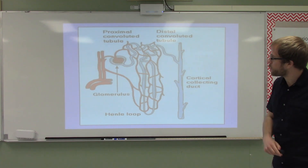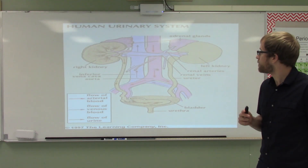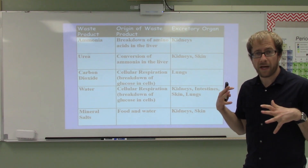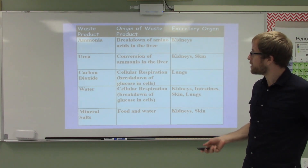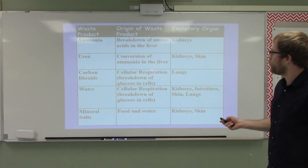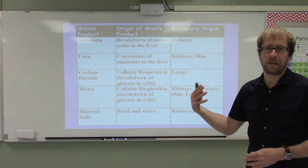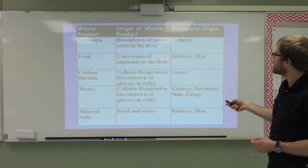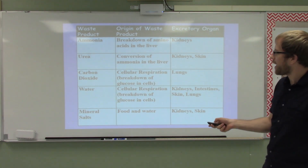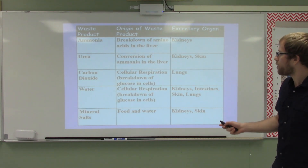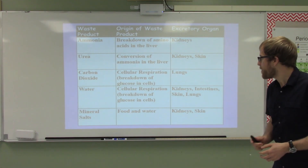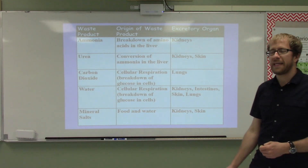Quick rundown of all the metabolic byproducts we need to get rid of: Ammonia — we break down amino acids in the liver and get rid of ammonia via the kidneys. Urea — this is what usually happens to ammonia; it gets converted to urea, and then our kidneys and our skin get rid of it. Remember, sweat is pretty much dilute urine. Carbon dioxide — that's going to be excreted by the lungs. Water — gets excreted by your kidneys, intestines, skin, and lungs. And mineral salts are secreted by your kidneys and your skin — what happens when your sweat dries on your skin? You can almost peel that grainy texture off. That is salts.